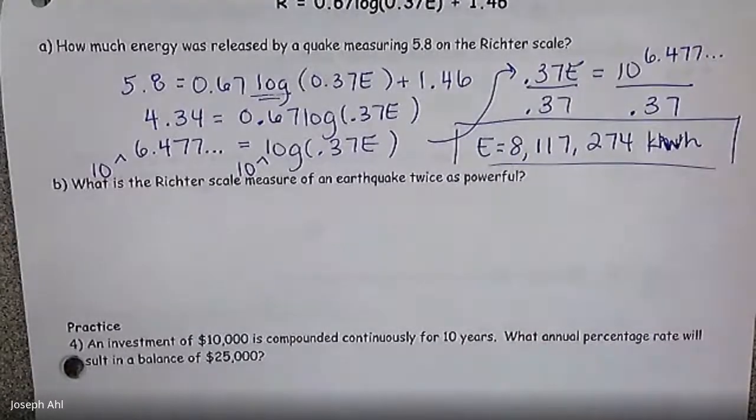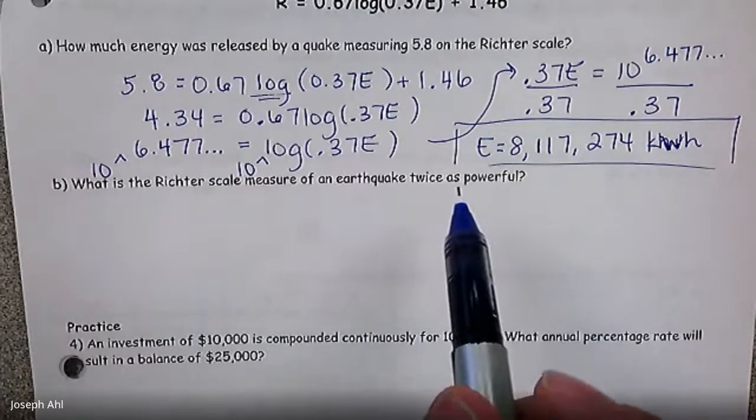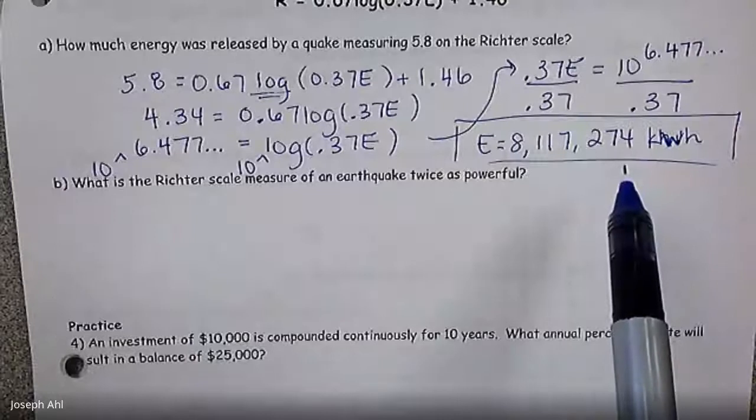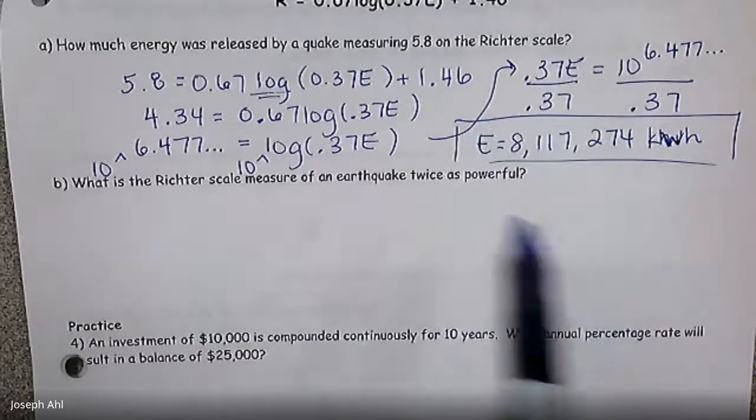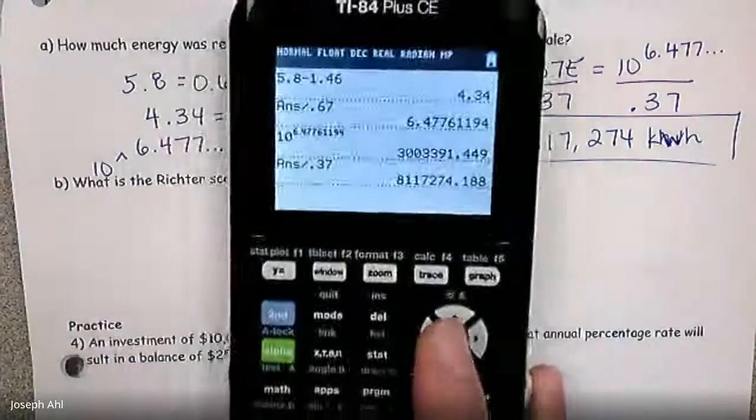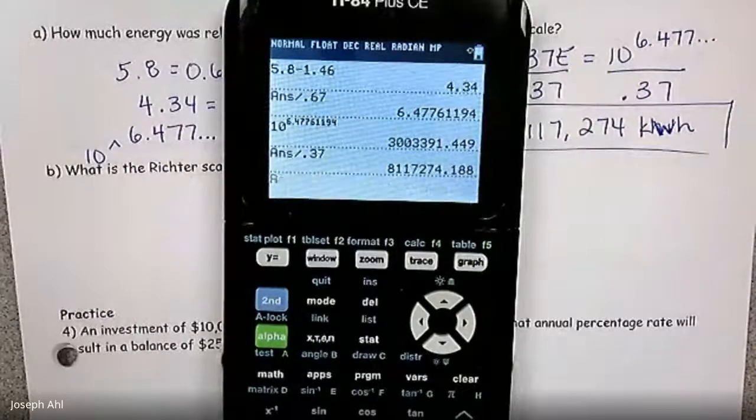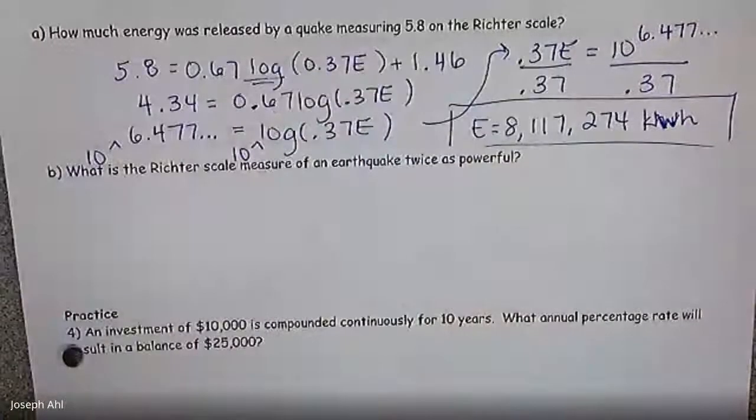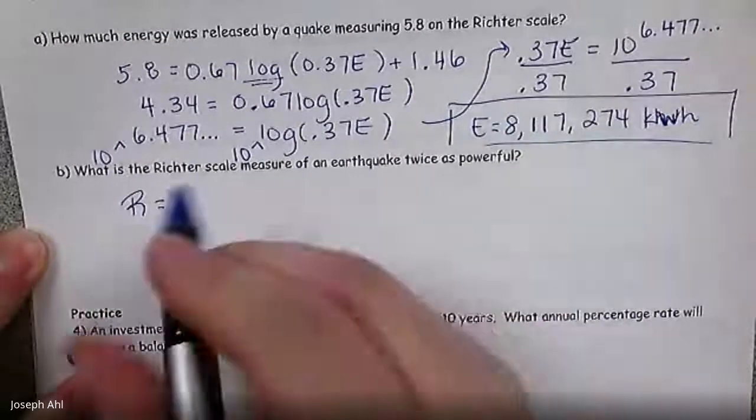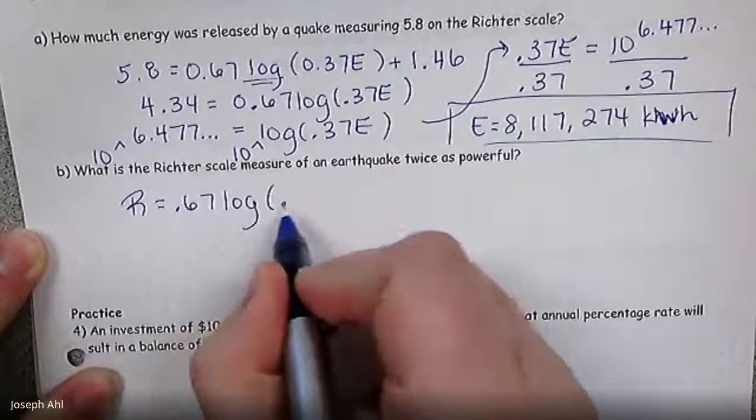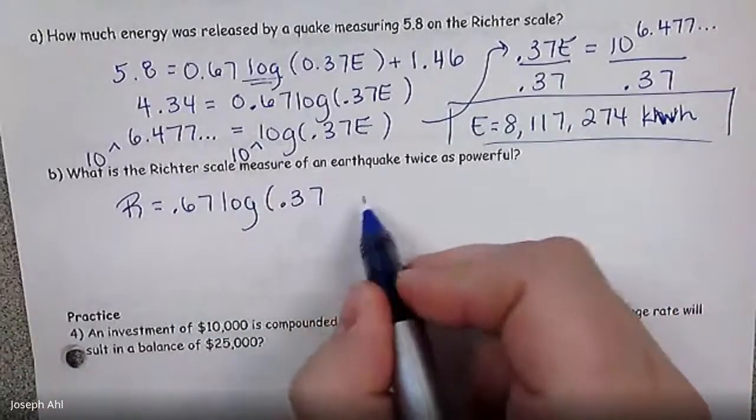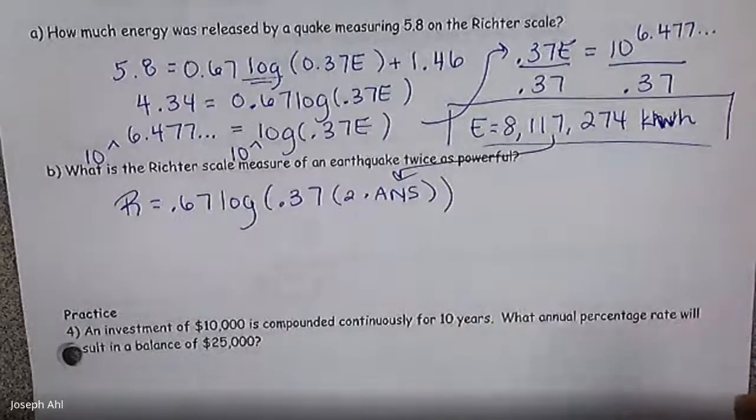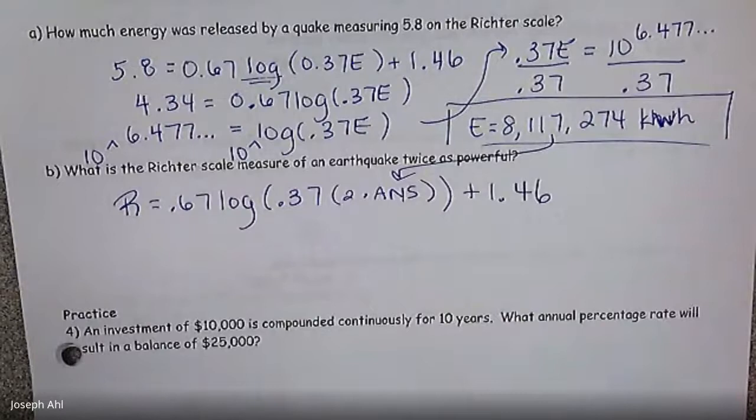Now, my favorite part of this question is actually part B. Part B says, what is the Richter scale measure of an earthquake that's twice as powerful? So I want to know, the Richter scale got a 5.8 when the energy was this many million kilowatt hours. If I double the energy that's outputted there. But if I double that to 16,234,548-ish kilowatt hours, how does that change the Richter scale value? And it seems like it's going to go up by a lot. So the Richter scale would be 0.67 times log of 0.37 times E. So for E, I'm just going to write that it's two times our last answer plus 1.46.